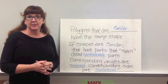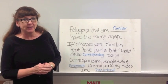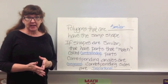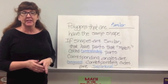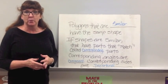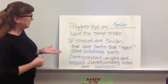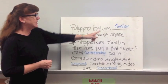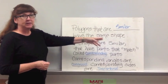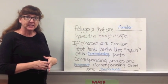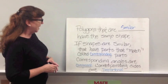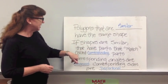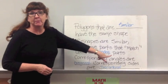Welcome to our video today on similar figures and indirect measurement. The activity you did in class today was a discovery activity, but now let's put some definitions and background behind what we saw. Polygons that are similar have the same shape — they're different sizes, but the same shape. If shapes are similar, they have parts that match called corresponding parts.